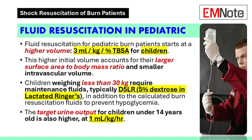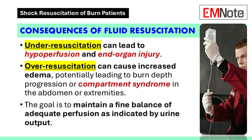Pediatric fluid resuscitation has key differences. We start with a higher initial fluid volume — 3 milliliters per kilogram per percentage of TBSA burned. For children under 30 kilograms, we also give maintenance fluids using D5LR (5% dextrose in lactated Ringer's) on top of the burn resuscitation fluids to prevent hypoglycemia. For children under 14 years old, our target urine output is higher — 1 mL/kg/hour.